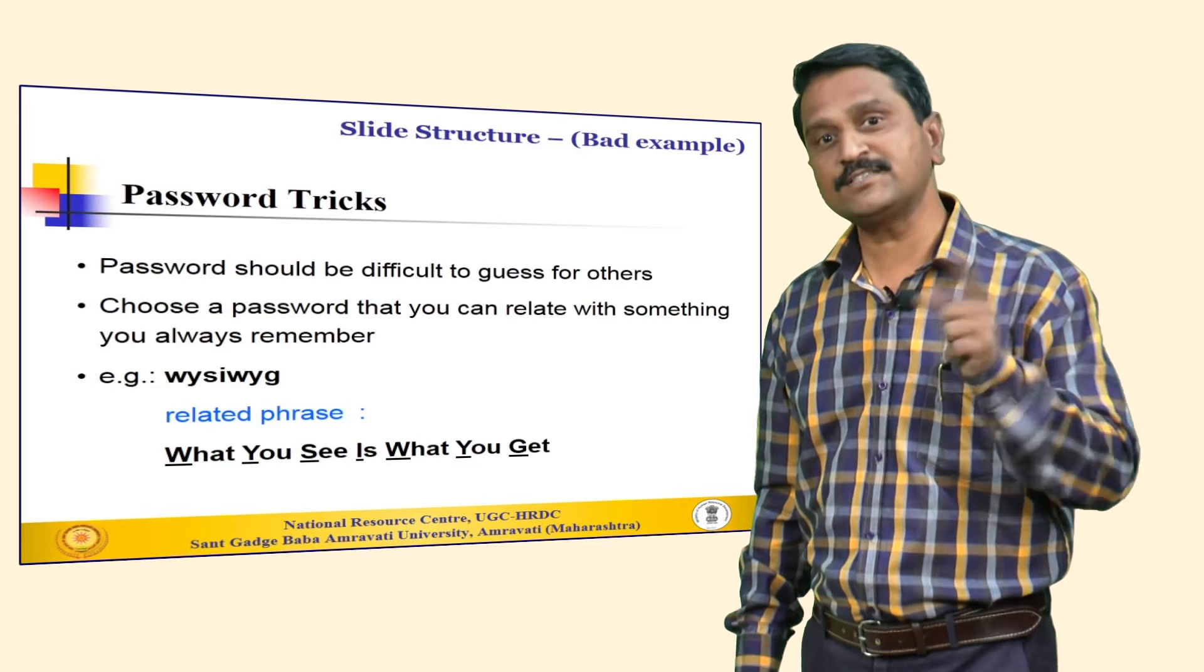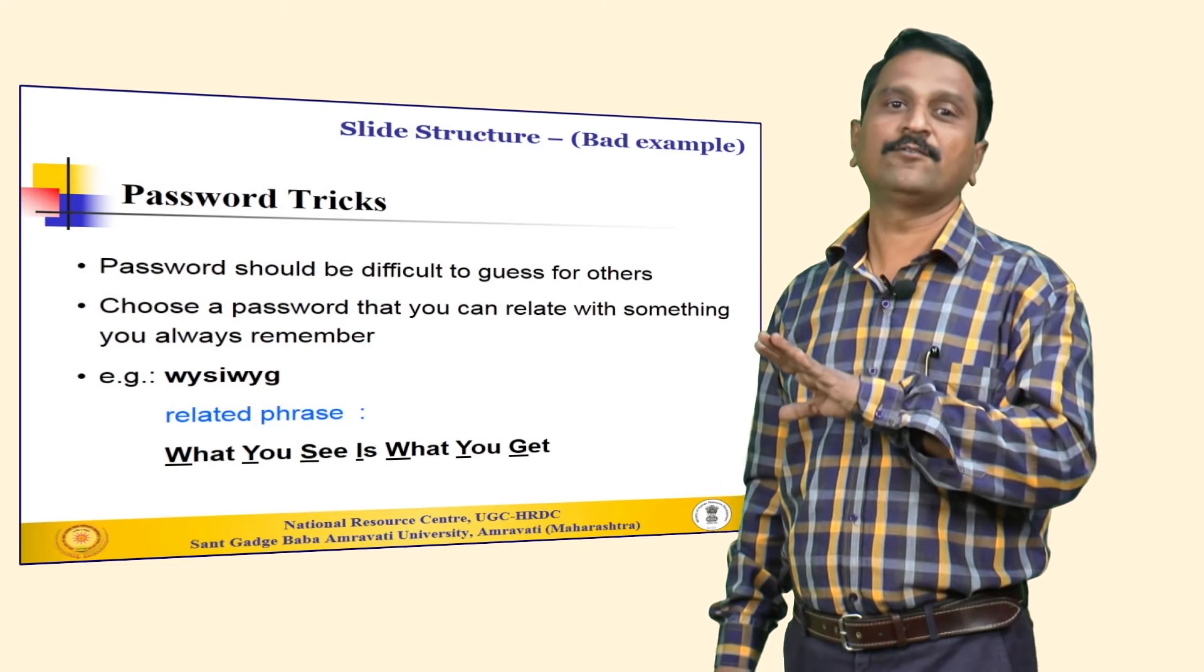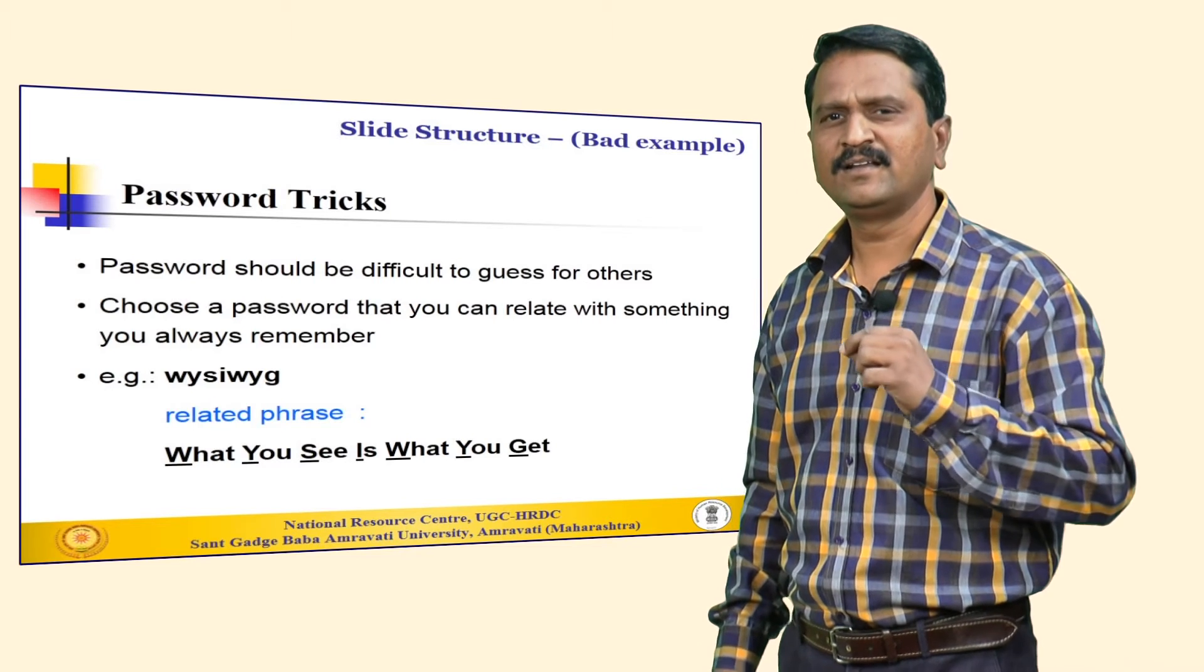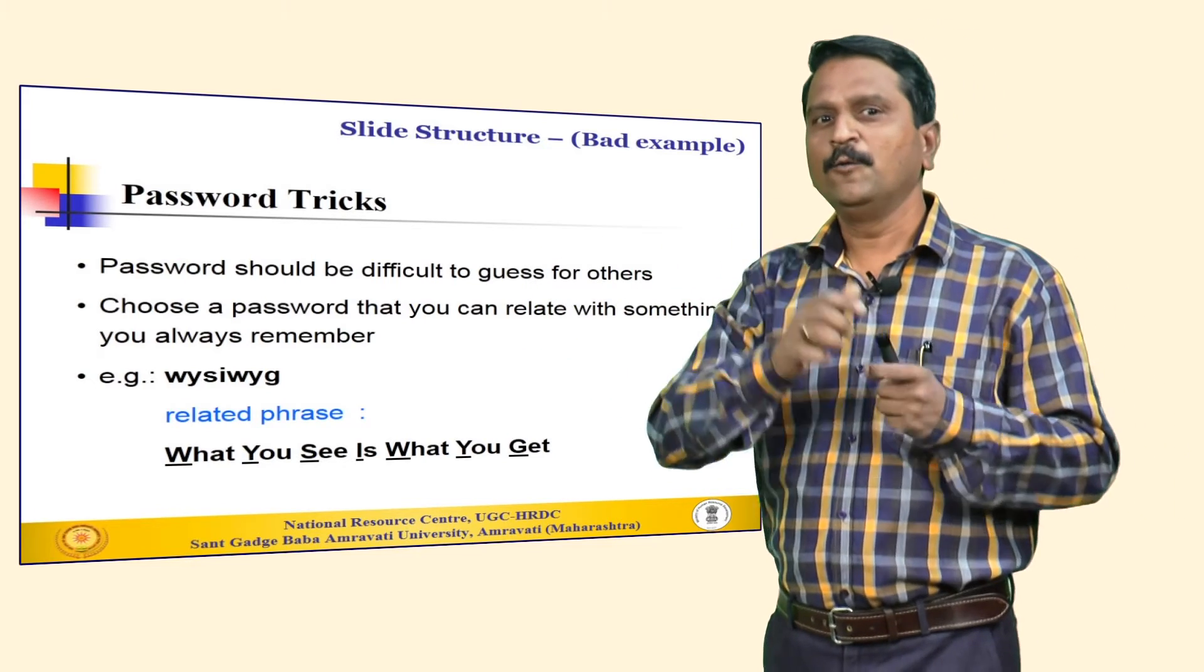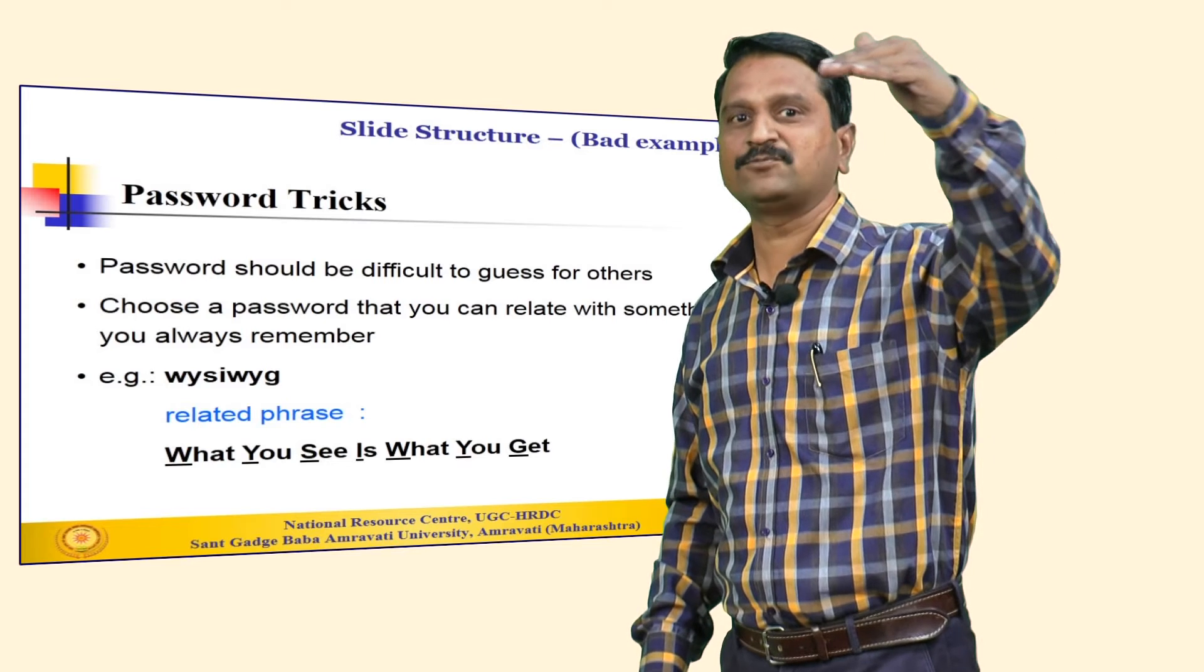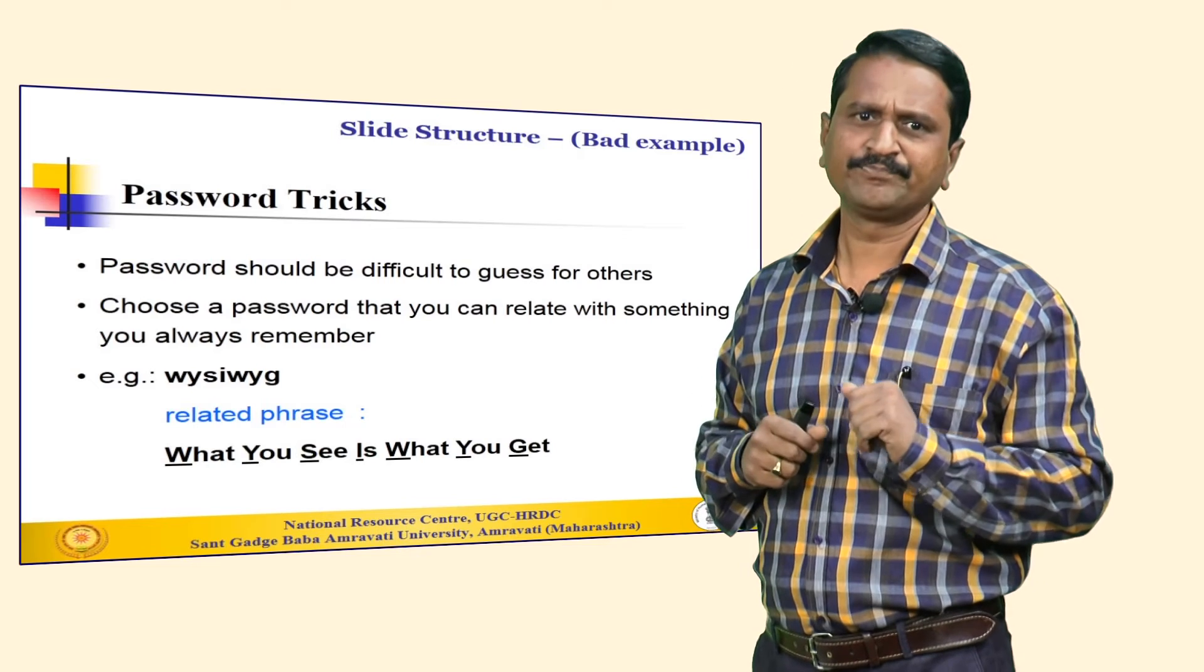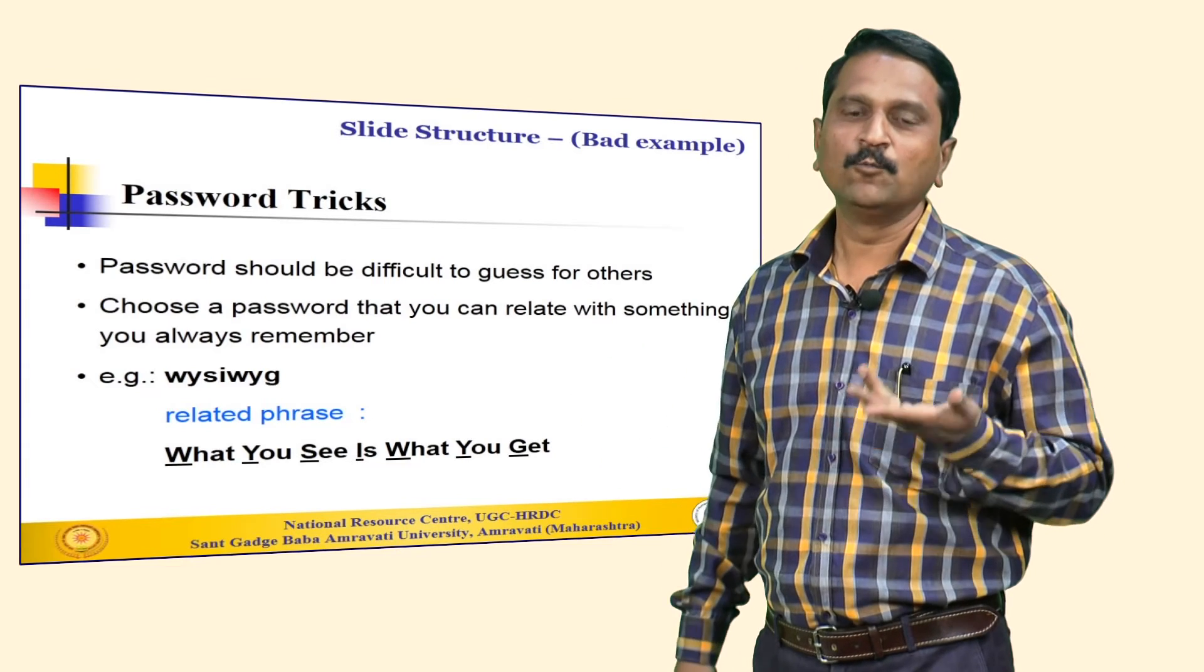Password should be difficult to guess for others. Choose the password that you can relate with something you always remember. This will help you to recall it faster but then it will be difficult for the others to guess. For example, W Y S I W Y G and the related phrase to this word is what you see is what you get. Now, I have tried to present this concept in a very interactive and interesting manner. But since I have displayed all the points at a time on the screen when probably I am explaining the first point that is password should be difficult to guess, by that time the audience may be very much focused on that W Y S I W Y G, what is the related phrase and something like that. My primary aim has been spoiled here.